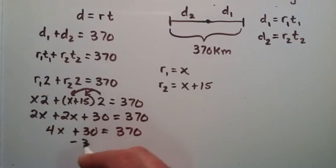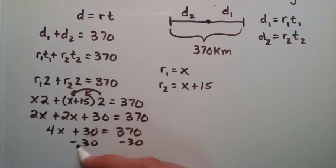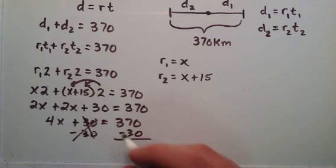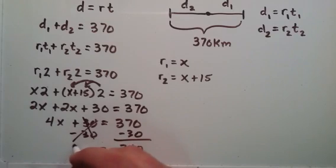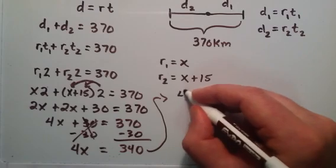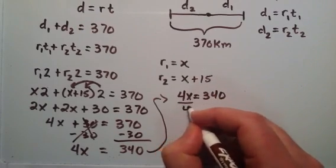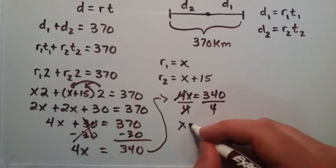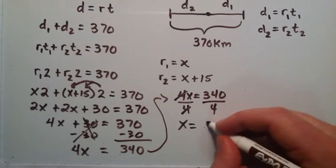If we subtract 30 from each side, positive 30 and negative 30 cancel. 370 minus 30 equals 340, so 4x equals 340. If we divide each side by 4, we find that x equals 340 divided by 4 equals 85.